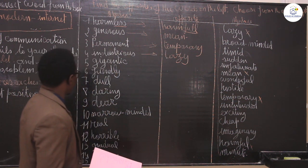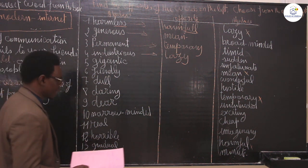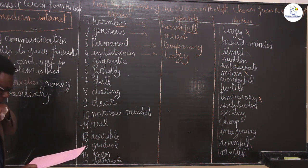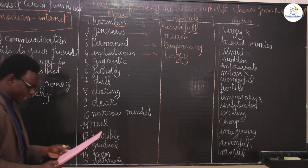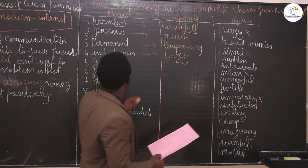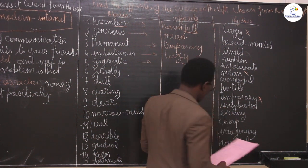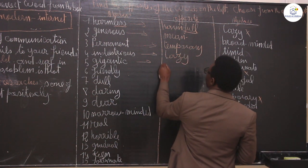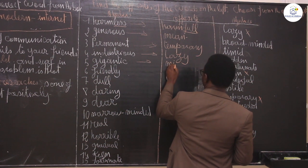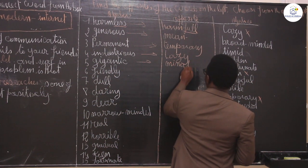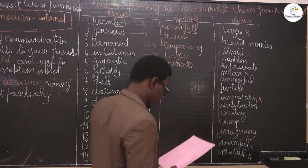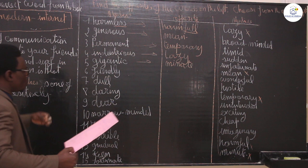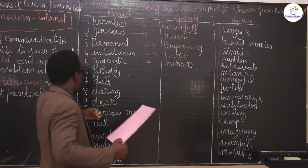The next word is gigantic. What is the opposite of gigantic? It is, of course, minot — meaning little or tiny. Minot is the contrary of gigantic, which means huge, large, strong, and big.